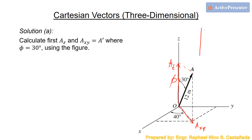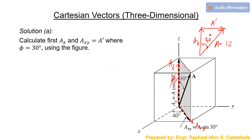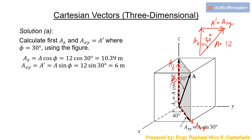Draw the right triangle with az, a_prime, and a, where the angle is 30 degrees. Since a equals 12 meters: az equals 12·cosine(30°), and axy equals 12·sine(30°) equals 6 meters. So we already have az and axy.